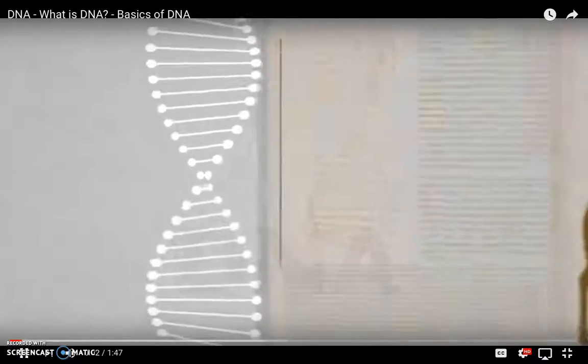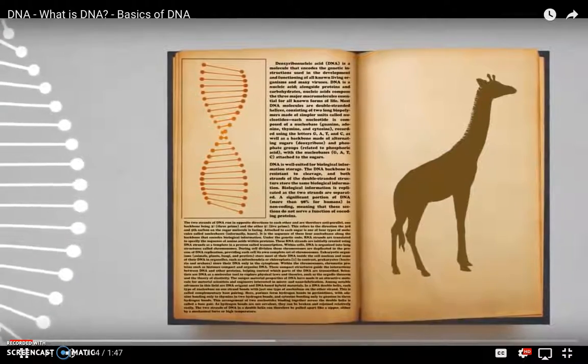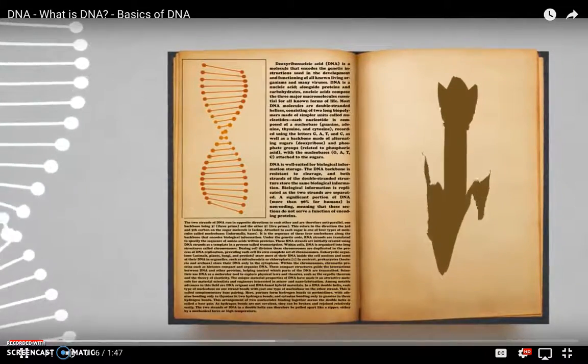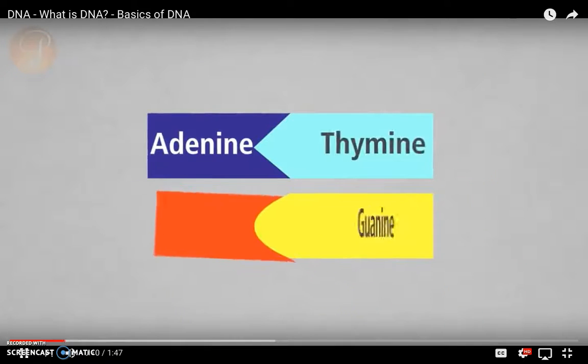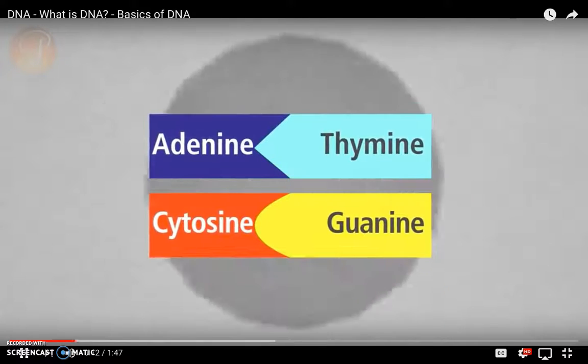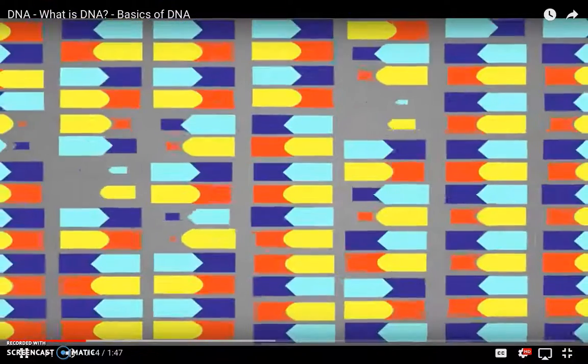DNA is the instruction manual for how to build life. From animals to plants to humans, it defines us all. Information is stored in DNA using four types of molecules, which come in pairs. We have billions of these pairs.